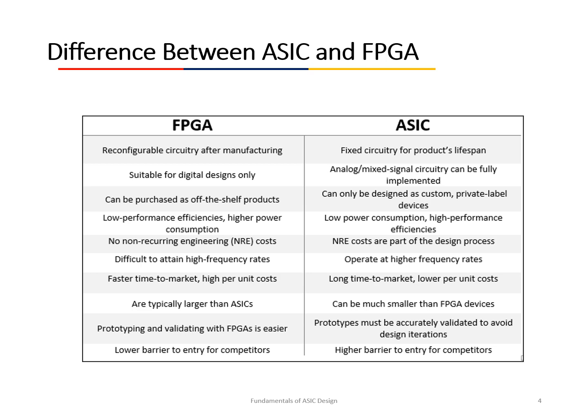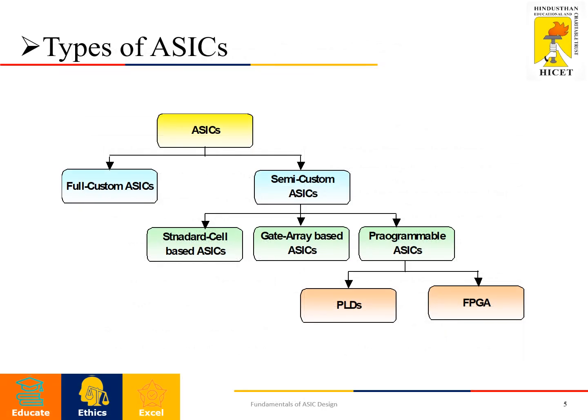The classifications or types of ASICs: ASICs are majorly classified into two categories — full custom and semi-custom. Semi-custom is further classified into standard cell-based ASIC and gate array-based ASIC. There are also programmable ASICs, which can be further classified into PLDs (Programmable Logic Devices) and FPGAs.